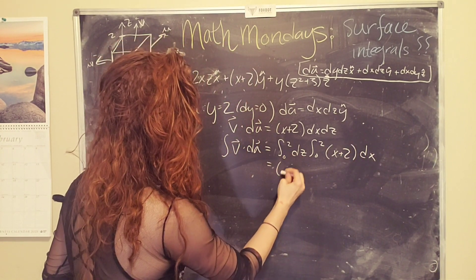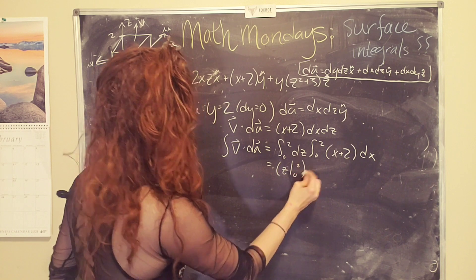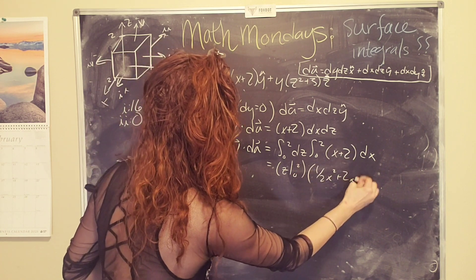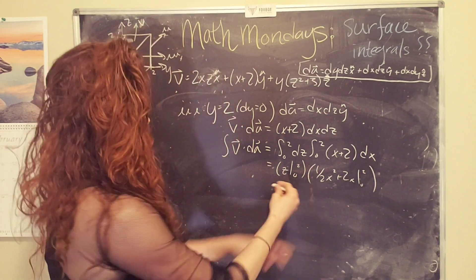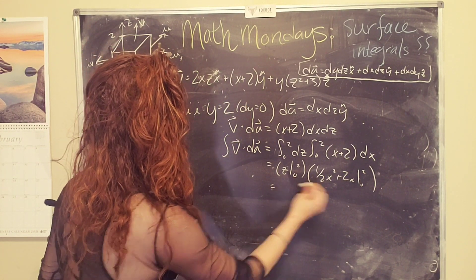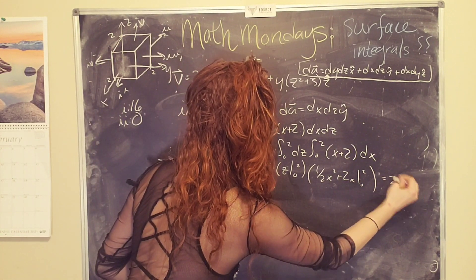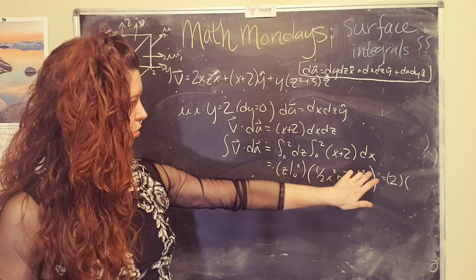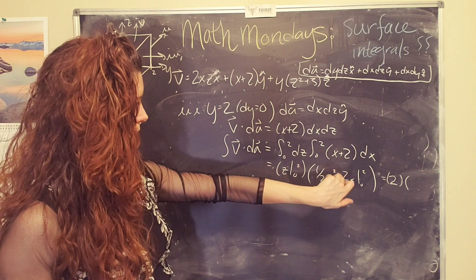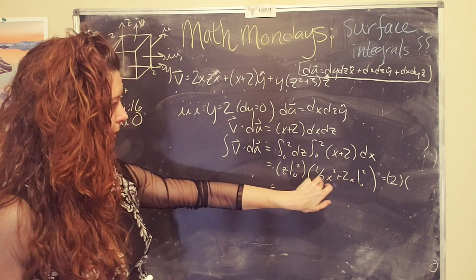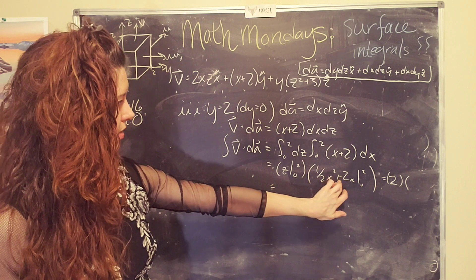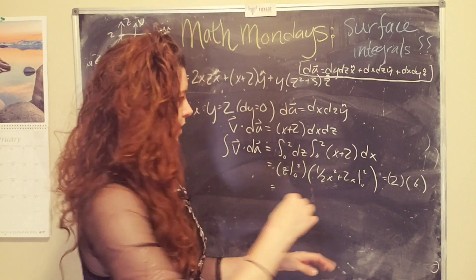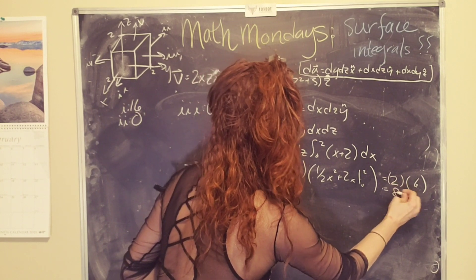And then this becomes z from zero to two, uh, two, uh, two minus zero. And then we have two plug in here. So two squared is four divided by two is two plus four is six minus zero is eight. Yay. Okay. Cool. Okay.